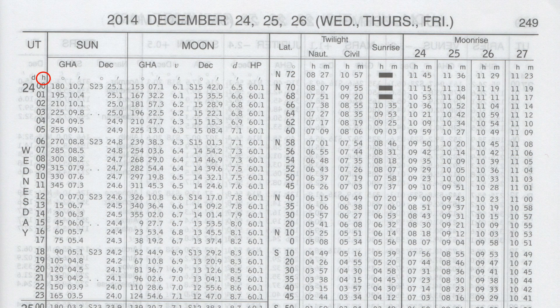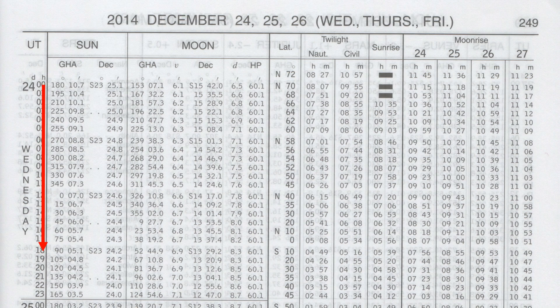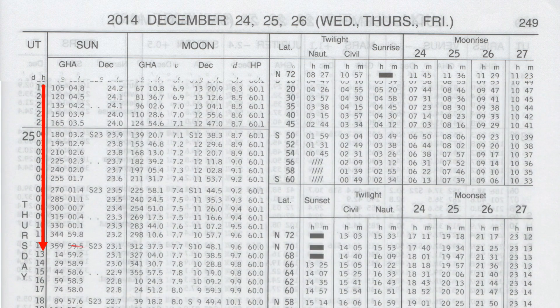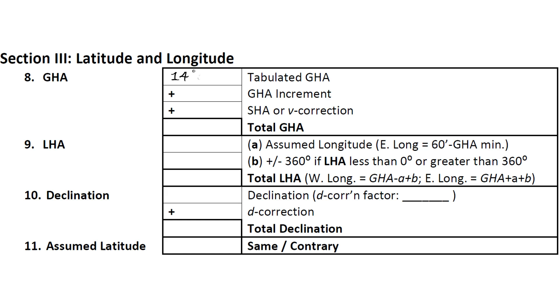For our example, we go to the 25th day of December at 1300 hours, and we see a value of 14 degrees and 59.2 arc minutes. We note this on our site reduction form.